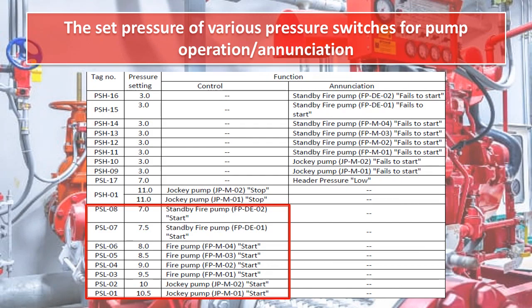From the list of pressure settings, the system is maintained at 11 kg/cm². When pressure drops to 10.5 kg/cm², the first jockey pump starts. At 10 kg/cm², the second jockey pump starts. At 9.5 kg/cm², the first main fire pump starts; at 9, the second main pump; at 8.5, the third main pump; at 8, the fourth main pump. At 7.5 kg/cm², the first diesel engine starts, and at 7 kg/cm², the second diesel engine starts.